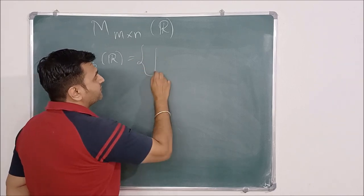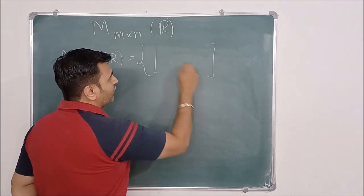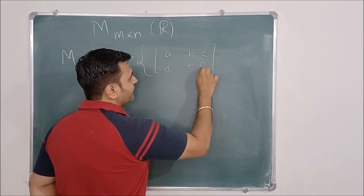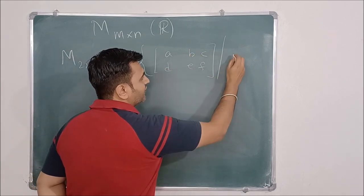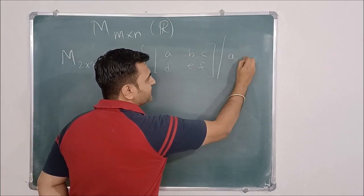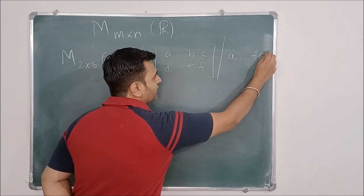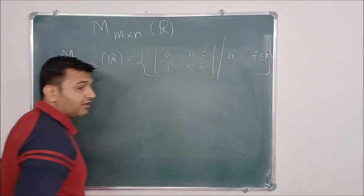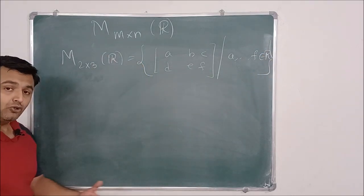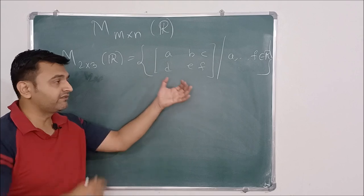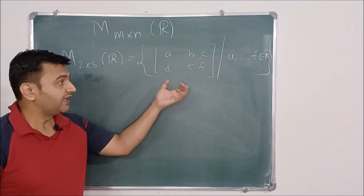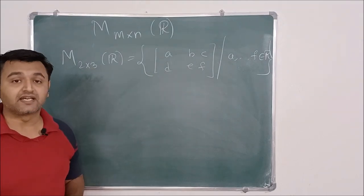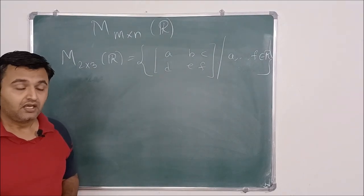So that means the collection of all matrices with entries A, B, C, D, E, F where all of A, B, C, D, E, F are real numbers. You take all 2×3 matrices and put them in one bucket — I'm calling this M_{2×3}(R). Now this is a set, and I want to see whether this forms a vector space.